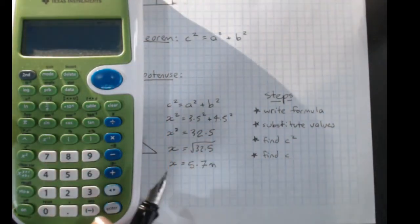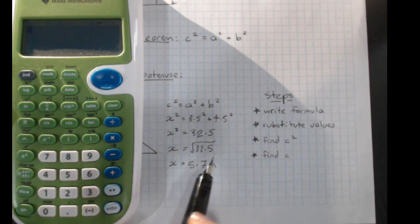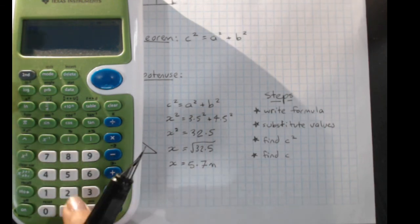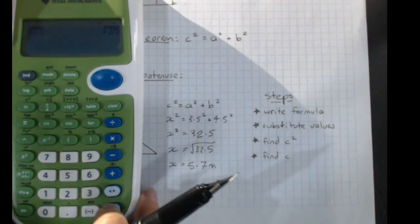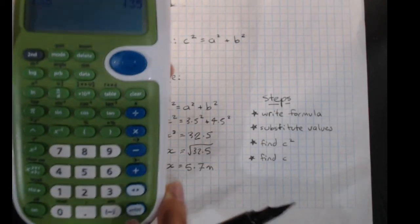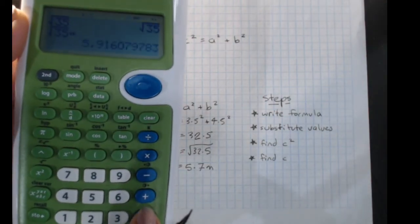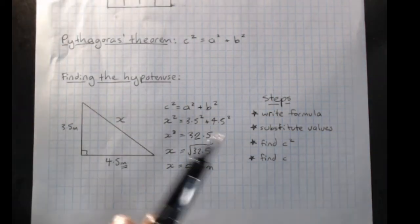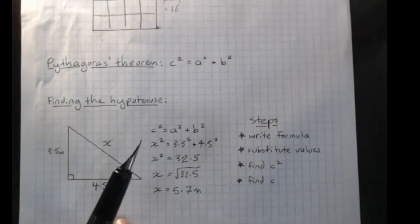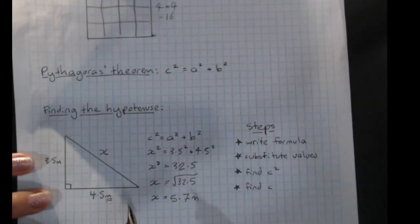Sometimes when you have to do a square root, if I'd had 35 instead of 32.5, we get a funny answer. It says, well, it's just the square root of 35. And that's not very helpful. There's this button here, which says, please give me a decimal answer. And it would give you a decimal answer. So that's how to use Pythagoras' theorem to find the hypotenuse and a little bit of explanation about what it actually means.